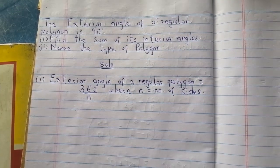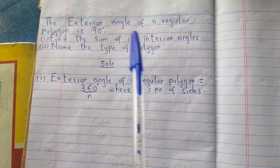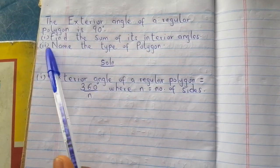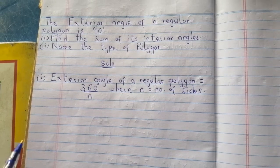The exterior angle of a regular polygon is 90 degrees. We should find the sum of its interior angles and we should name the type of polygon.